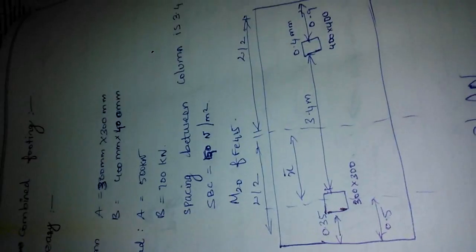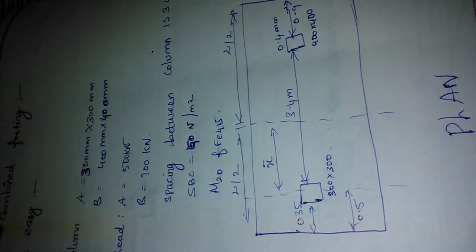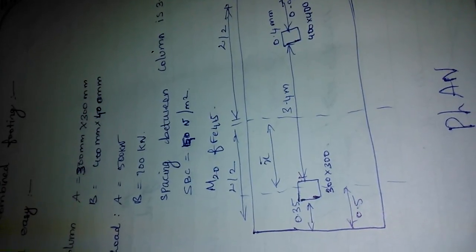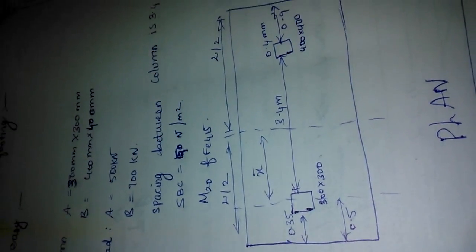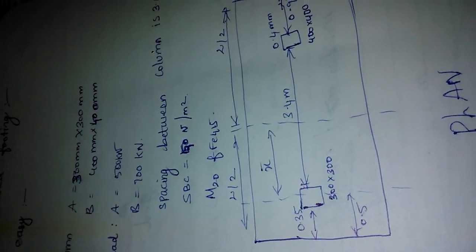So this is very simple. This is a plan diagram which shows the two columns separated by 3.4 meters and the remaining side distances are 0.35 plus 0.9. So this is how this plan works.